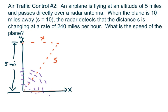Hi everyone! An airplane is flying at an altitude of five miles and passes directly over a radar antenna. So maybe I should draw the airplane here. Here's your airplane. That's my airplane.